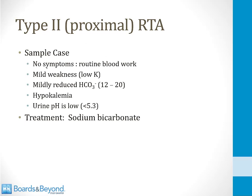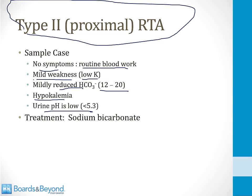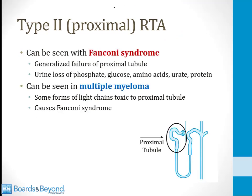Here's a sample case. A patient has no symptoms and comes in for routine blood work, or maybe they have some mild weakness due to low potassium. The blood work shows a reduced bicarbonate in the mild range of 12 to 20, there's hypokalemia, and the urine pH is low. This is a type 2 proximal RTA profile, and the treatment is with sodium bicarbonate, which replenishes the bicarbonate being lost in the urine.